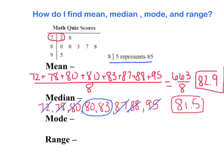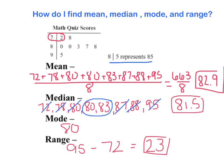My mode is the number that occurs the most. The number that occurs the most is 80, so I've got that. And now my range — I need to take my top number, which is 95, and my bottom number, which is 72, and find the difference between them. On my calculator, 95 minus 72 gives me 23. So my range is 23.